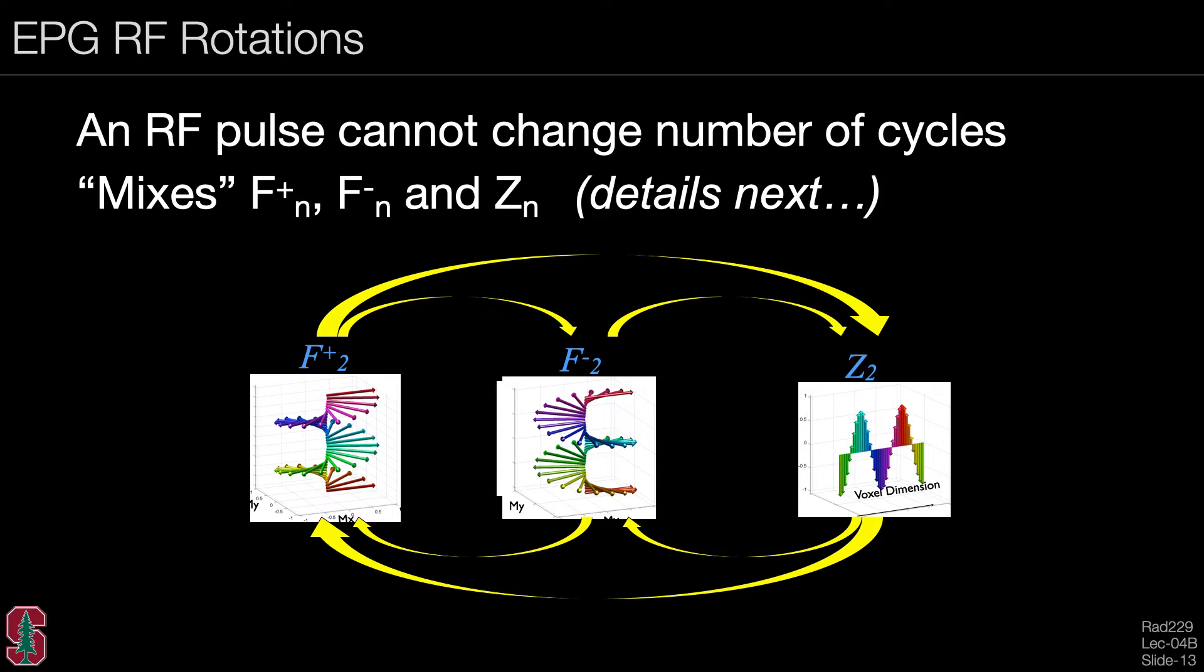So now let's look at RF rotations or notations. And the most important concept here is to remember that a notation cannot change the number of cycles in a voxel. It can mix the states of a given order. And that's what the RF rotation will do. So you see here, we have the order two states shown here. We have the F plus, the F minus and the Z. And in all cases, there are two cycles across a voxel. And an RF pulse will in general mix between all three of these states. However, there are some special cases where states are simply swapped and some cases where states do not interact.